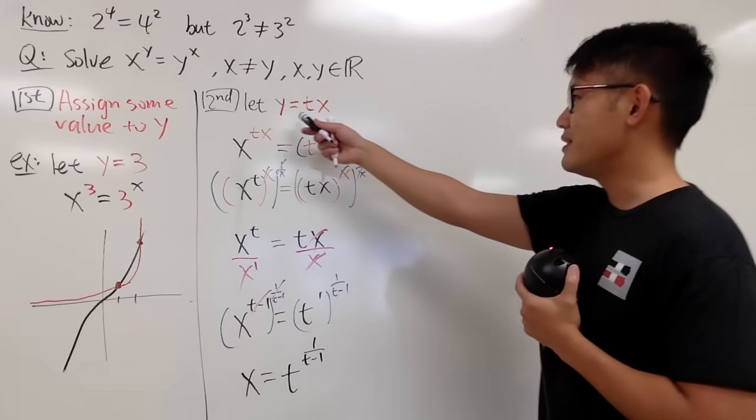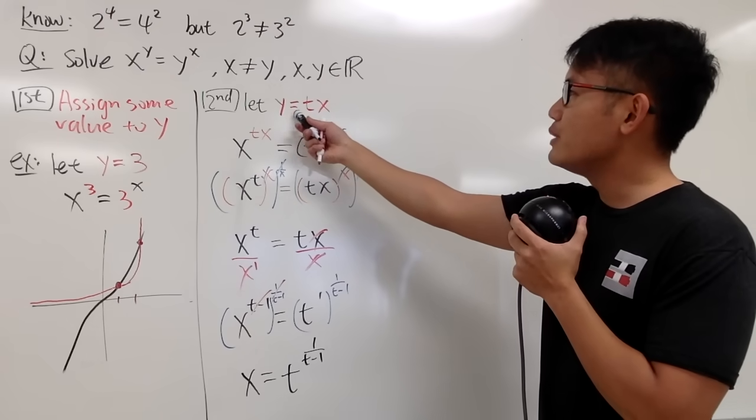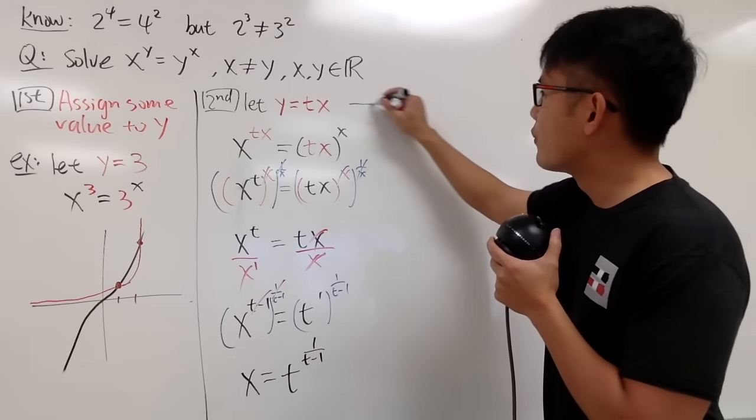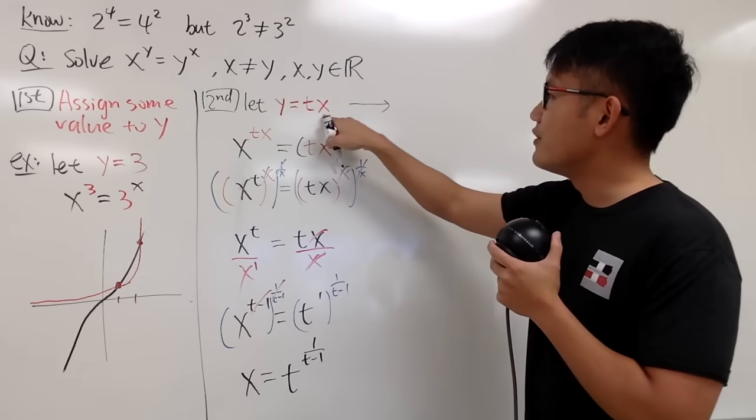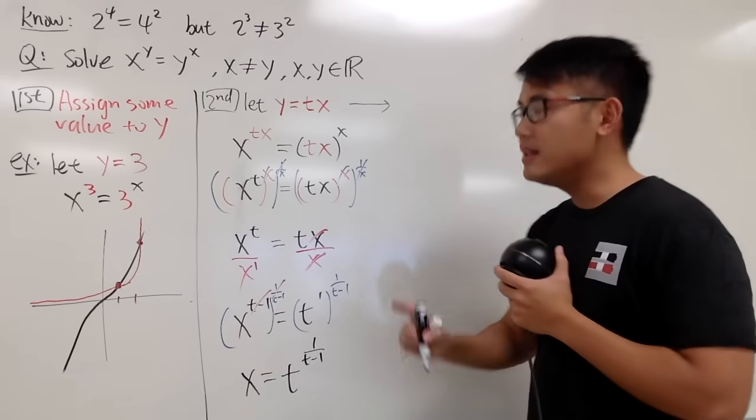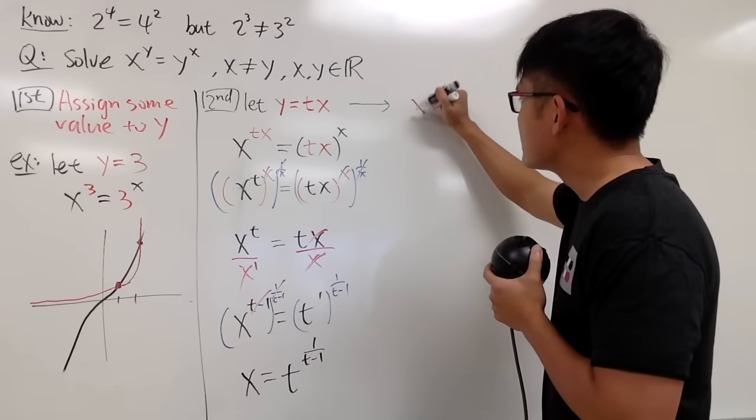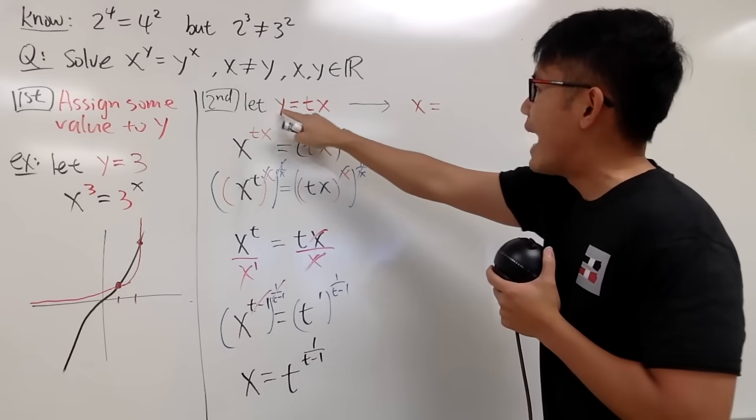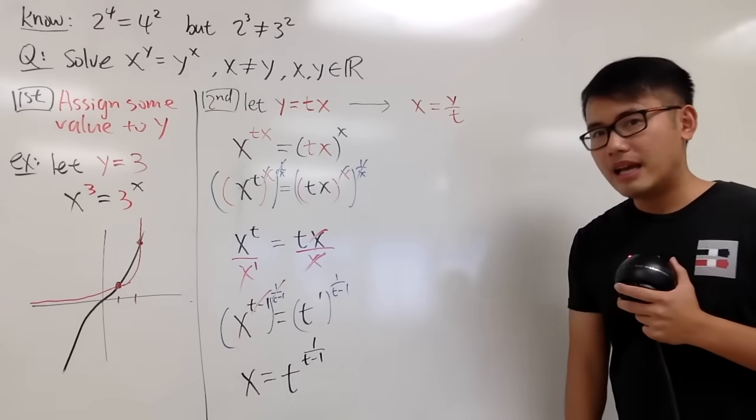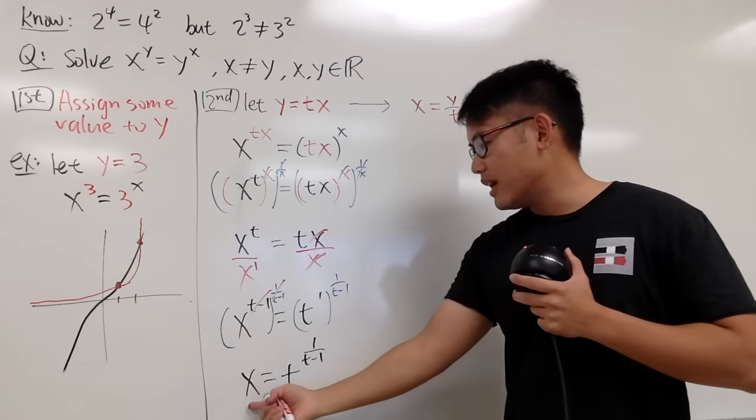But what's y? It's actually much easier, because you see that y is equal to t times x. So from here, you see that I can divide both sides by t, and I can say x is equal to y over t.